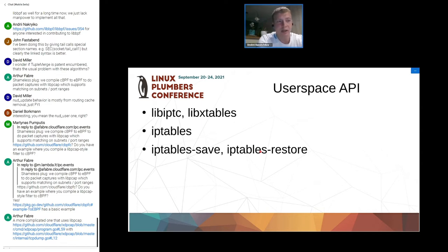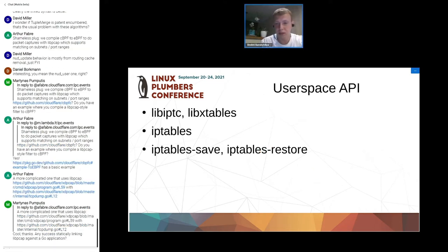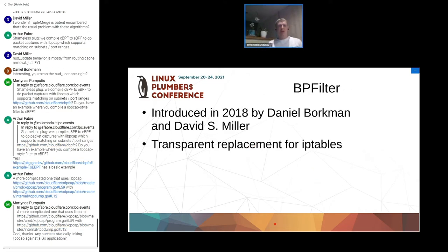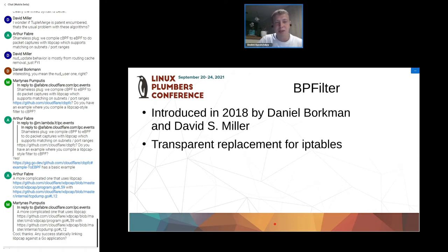Hyrum's law says that there are other third-party consumers of the kernel API. Now that we have a good understanding of how IP tables works, let's move our discussion to BPFilter. As mentioned, the idea of BPFilter was introduced in 2018 by Daniel Borkman and David S. Miller. It got a lot of discussion and even its first patch. The idea was to more or less transparently replace the implementation of IP tables for an end user.